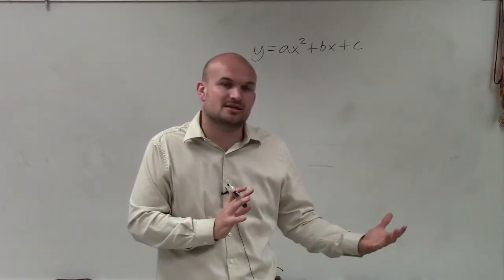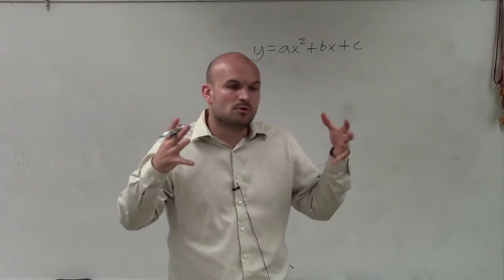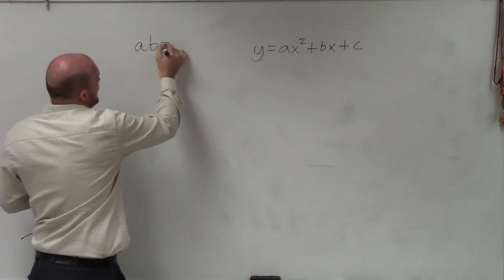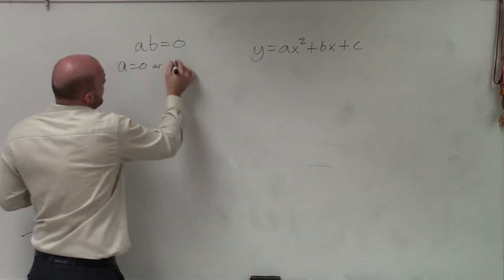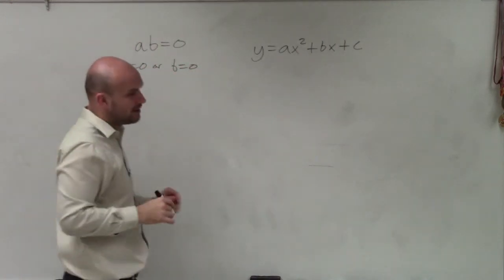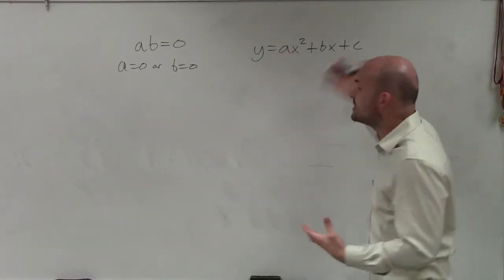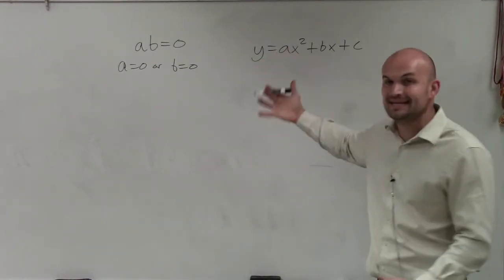When we're doing this the main important thing the main idea that I want you to wrap around especially with factoring not so much with the completing the square and the square root method but we're getting around factoring is the idea of the zero product property. That a times b equals zero then a equals zero or b equals zero.